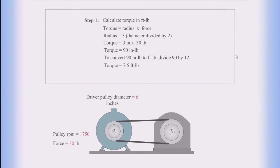Step one: Calculate torque in foot-pounds. Torque equals radius times force. Radius equals diameter divided by 2. Torque equals 3 inches times 30 pounds, so torque equals 90 inch-pounds. To convert 90 inch-pounds to foot-pounds, divide 90 by 12. So torque equals 7.5 foot-pounds.